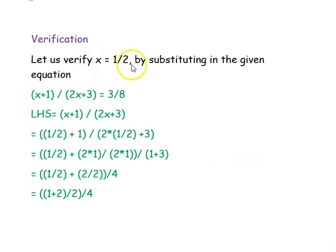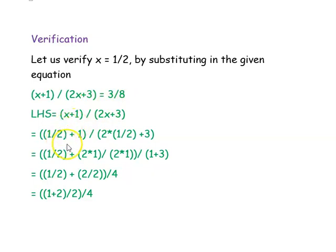Now let us verify our solution by substituting x = 1/2 in the given equation: (x + 1)/(2x + 3) = 3/8. Substituting on the left-hand side: (1/2 + 1) divided by (2 × 1/2 + 3). We need to add these two numbers.